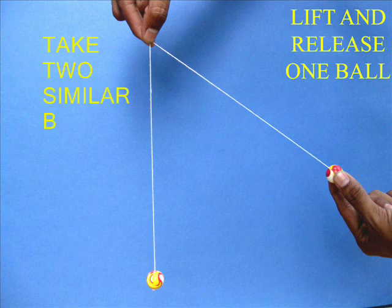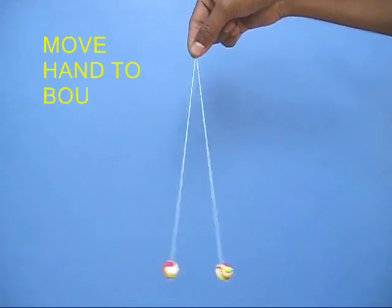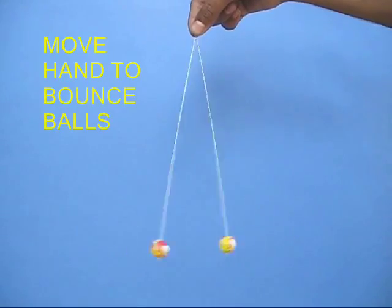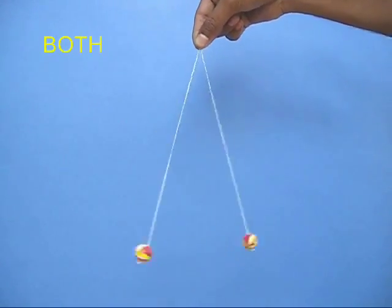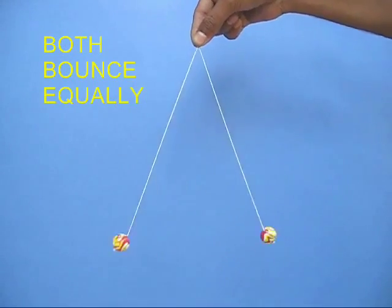Take two exactly similar balls, hang them and release one. The balls will collide and bounce back. And you will see that they go back the same amplitude because they are the same weight.